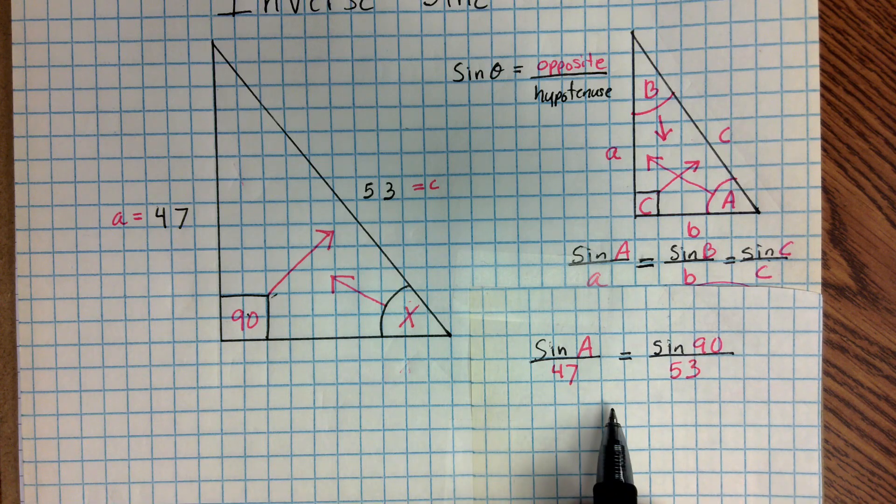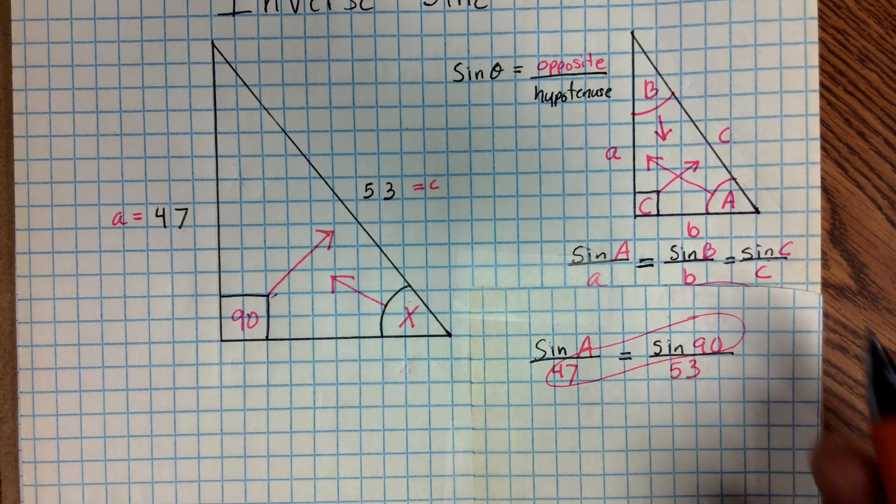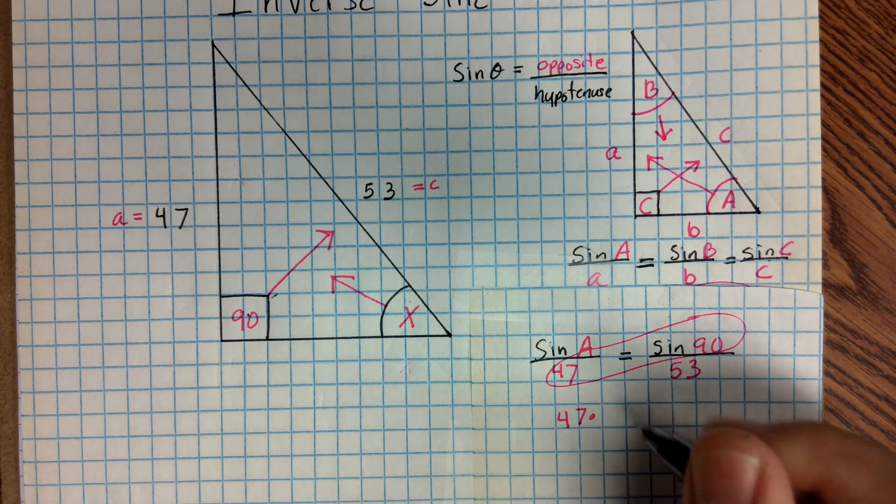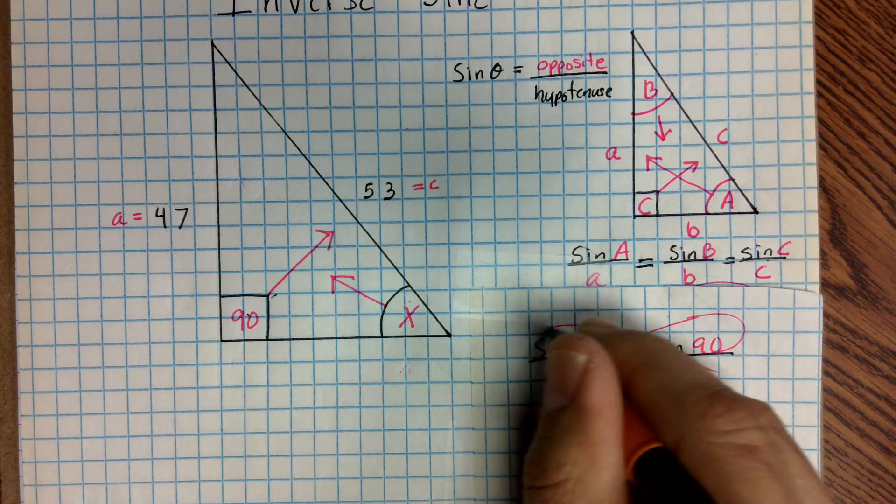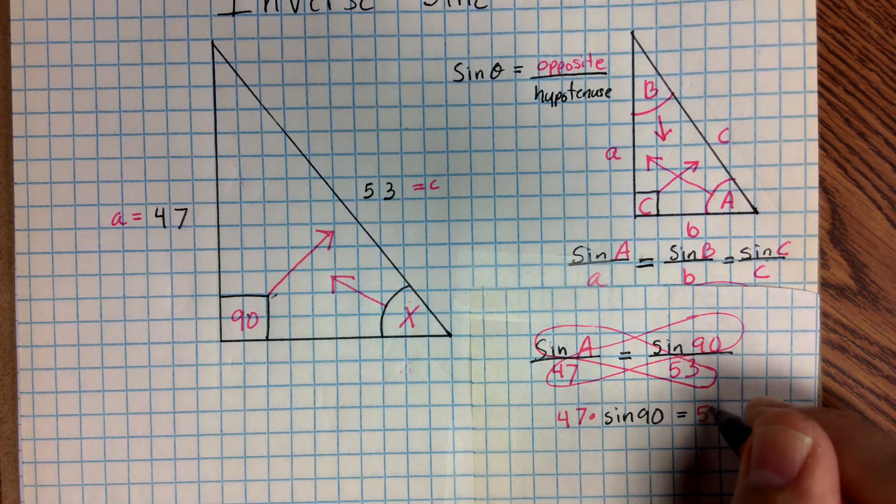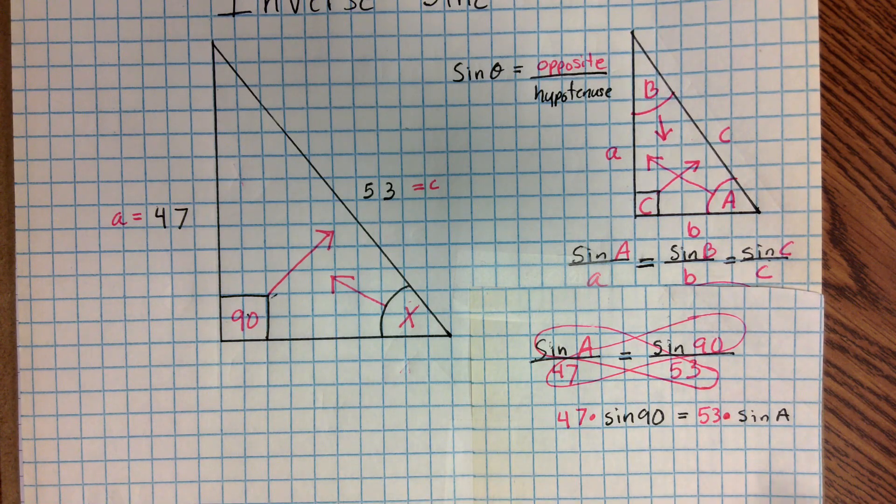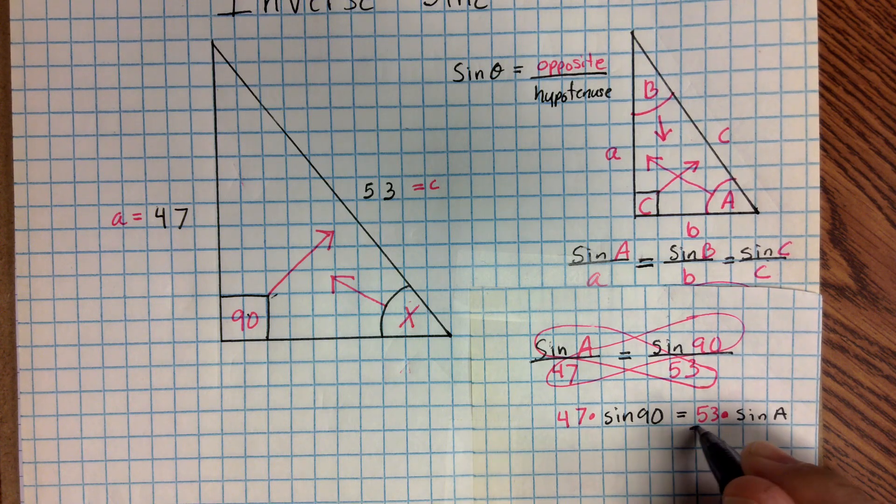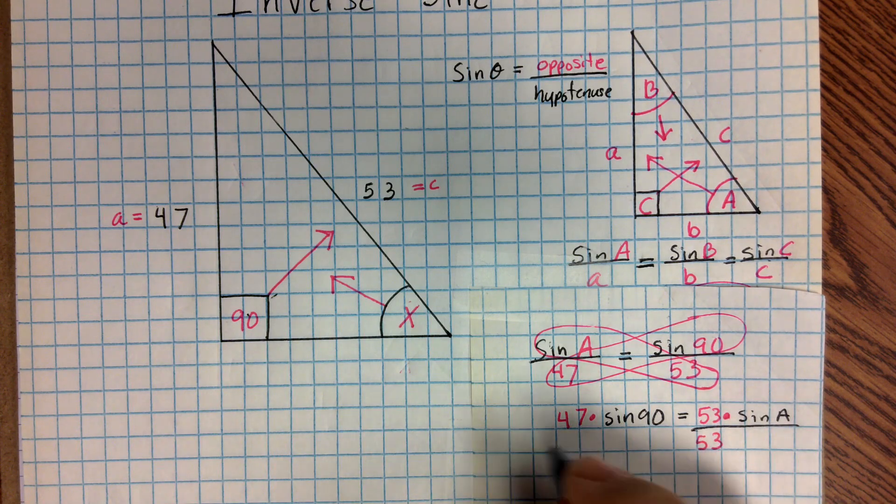And now, if I'm going to go ahead and I want to solve this problem, I'm just going to be using inverse operations. So remember, we're just simply going to cross multiply this. So I end up with 47 times sine 90 is equal to 53 times sine A. Now remember, we're trying to solve for sine A, where that's what we're trying to get. So what we need to do, unlike some of the other problems we did, I need to go ahead, and instead of dividing out sine, because we don't know what sine A is, I'm going to divide out the 53. Now if I divide it on the right side, I've got to divide it on the left.